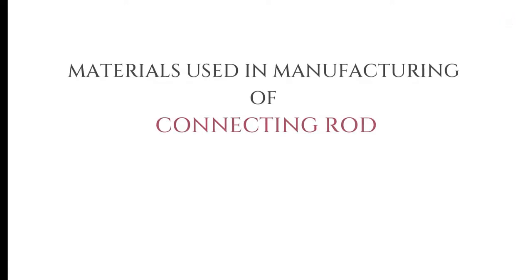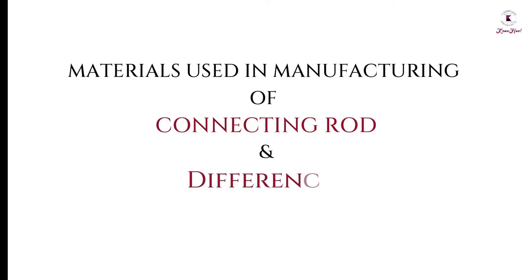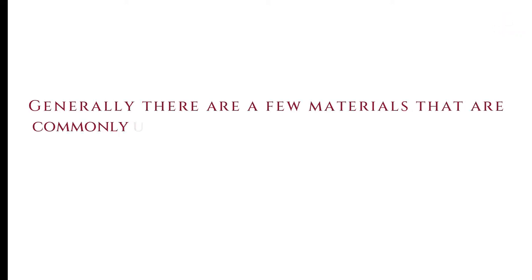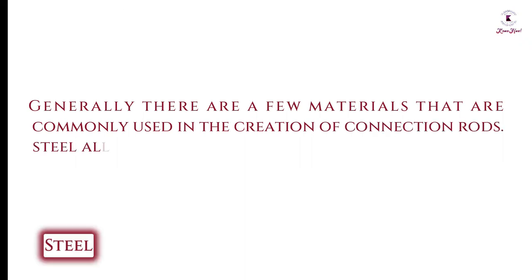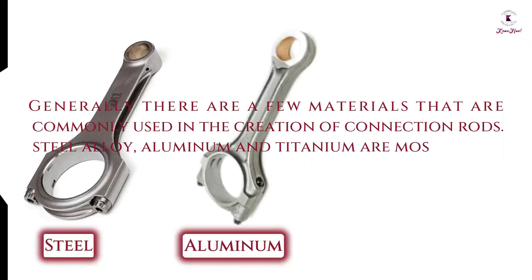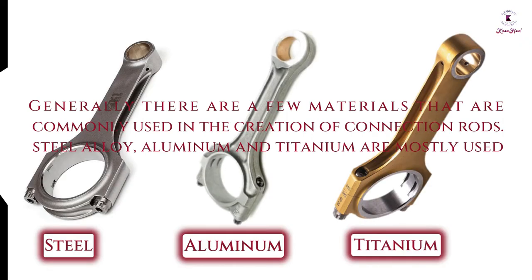Now let's discuss the materials used in connecting rods, their differences, and which one is the right choice. Generally, there are a few materials that are commonly used in the creation of connecting rods: steel alloy, aluminum, and titanium are mostly used.